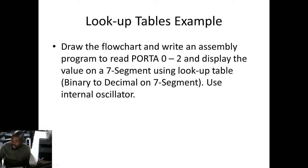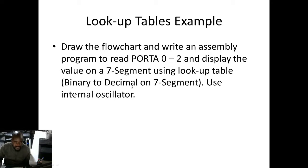Let's consider this example: draw the flowchart and write an assembly program to read port A0 to A2 and display the value on a 7-segment using a lookup table. Basically, we have a 3-bit binary value we are supposed to read and display the decimal value corresponding to that binary on a 7-segment — it's a binary to decimal converter displayed on a 7-segment. We need to do that using the lookup table.